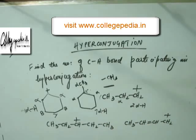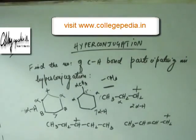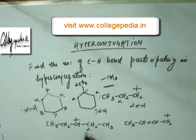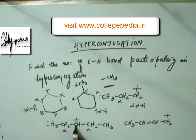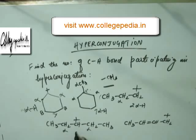In this intermediate, the carbocation is bonded from both sides. This carbon is an alpha carbon and this carbon is also an alpha carbon because they are at equal distance from the carbocation. This one has two alpha hydrogens and this one also has two alpha hydrogens, so altogether this intermediate has four alpha hydrogens.